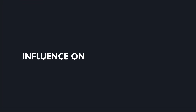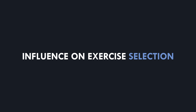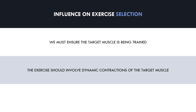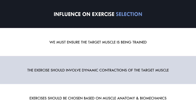Now that we understand what these terms mean, how does anatomy and biomechanics influence exercise selection for hypertrophy training? This is the most fundamental and important consideration for exercise selection. We should understand that the goal for hypertrophy training is to stress the muscle. While this can be achieved using a variety of different exercises and modalities, we must ensure that the target muscle is actually being stressed. The exercise we select should involve dynamic contractions of the muscles we are trying to train while overcoming resistance. This is where anatomy and biomechanics come into play — we can select exercises that require the target muscle to contract in this way to overcome the resistance of the load being used. Simply put, we must select exercises which actually train the target muscle, otherwise we are just stressing other muscles or tissues unnecessarily.